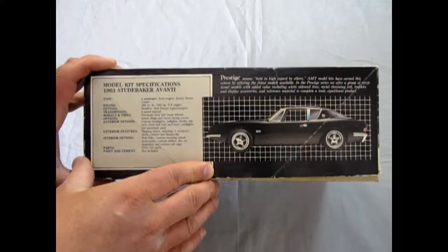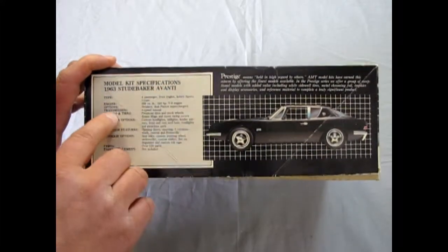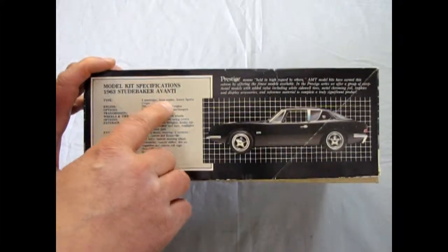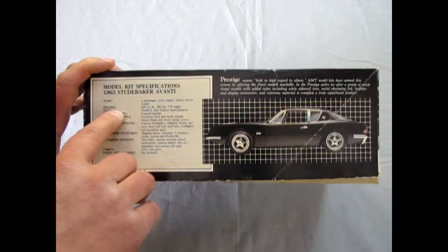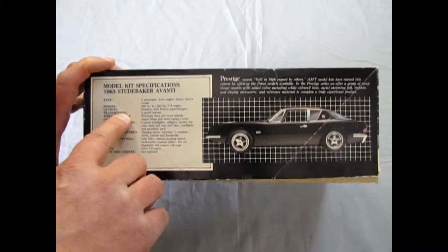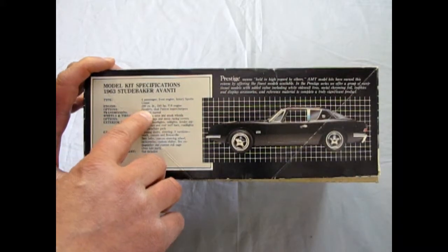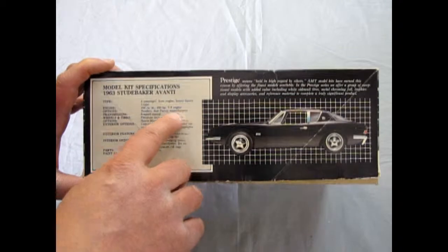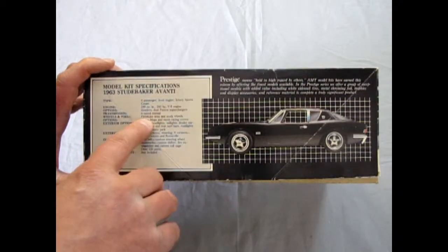Model kit specifications for the 63 Studebaker Avanti type: four passenger front engine luxury sports coupe. Engine: 289 cubic inch, 240 horsepower V8 engine. Options: headers, dual Paxton superchargers. Transmission is a four-speed manual.